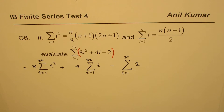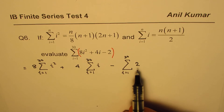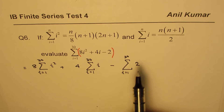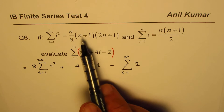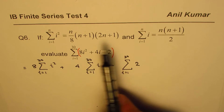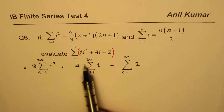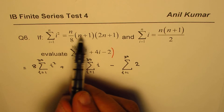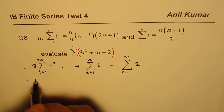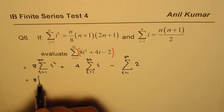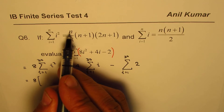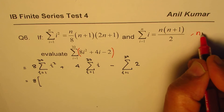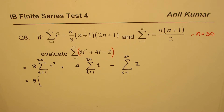That becomes the sum we need to find. In this question we can use these formulas — n is 30 for us. Using the i² formula with n = 30, I'll replace n with 30: 8 times the expression, so writing it down with n = 30.